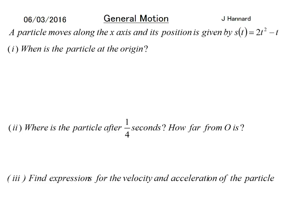Let's do another one. A particle moves along the x-axis and its position is given by s(t) = 2t² - t. When is the particle at the origin? At the origin means where the story starts, so that's when s = 0. We set 2t² - t = 0, bring the common factor of t out, and you get t(2t - 1) = 0.